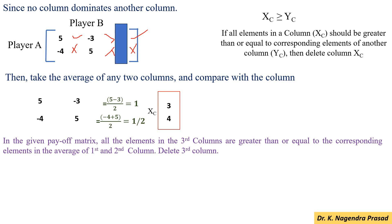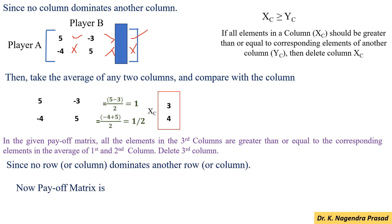So, now the payoff matrix is a 2 by 2 matrix. That is, player A has 2 strategies — strategy 1 and 2. Player B also has 2 strategies — strategy 1 and 2.